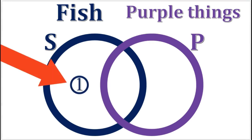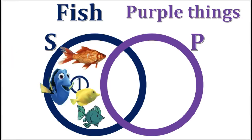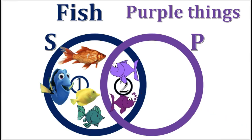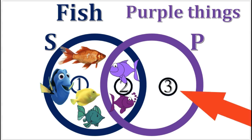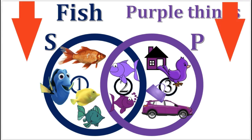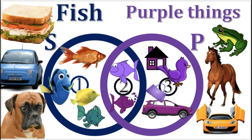Area 1 will contain all the fish that are not purple. Area 2 will contain all the fish that are purple. Area 3 will contain all the purple things that are not fish. And everything outside of both circles will contain all the things that are neither fish nor purple things.